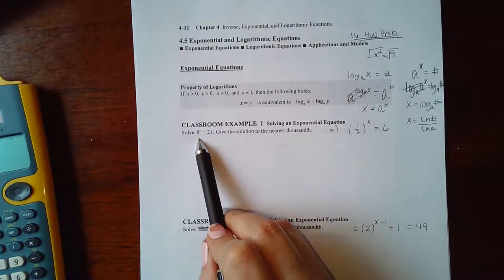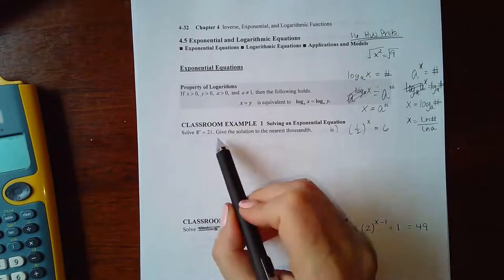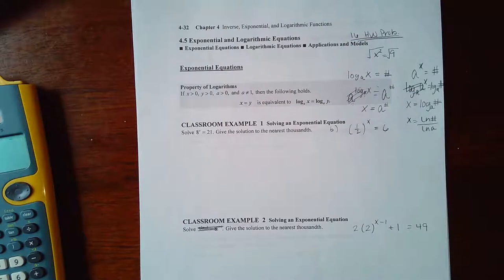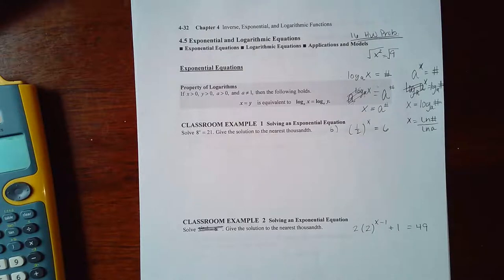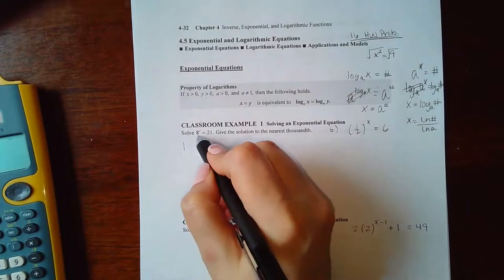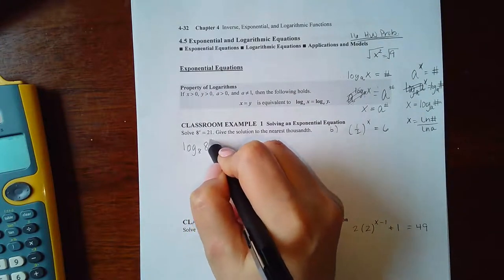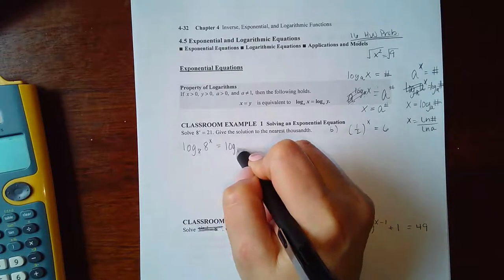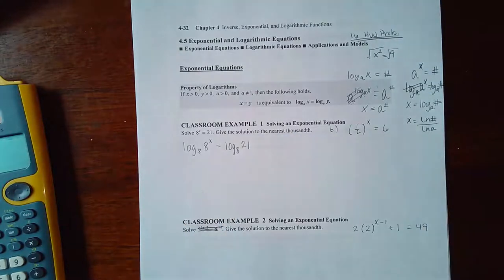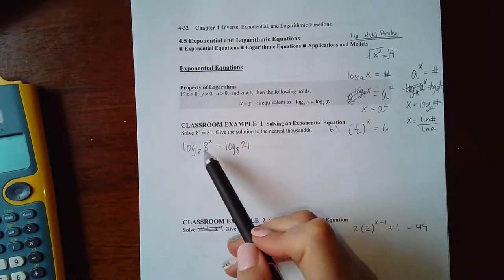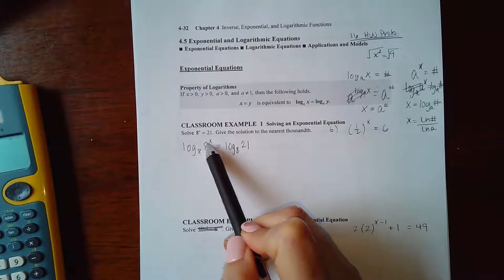If I have this problem with base 8 to the power x, there's no way to get 21 and 8 to have the same base. So what we can do is get rid of the 8 by using the inverse of an exponential — the inverse of an exponential is a log. So if the base is 8, my log needs to be base 8, and whatever I do on one side I have to do on the other side. Then using the property of inverses, log base 8 and exponential base 8 cancel each other out.